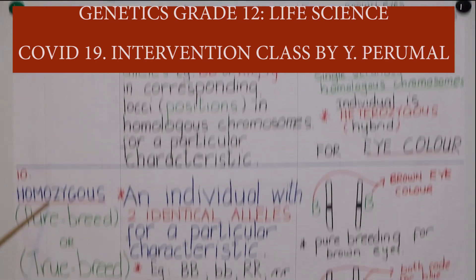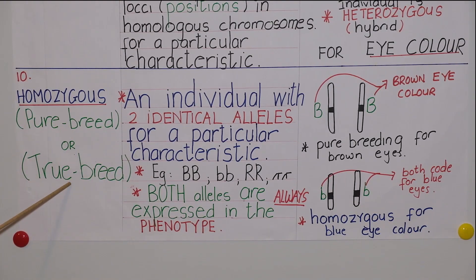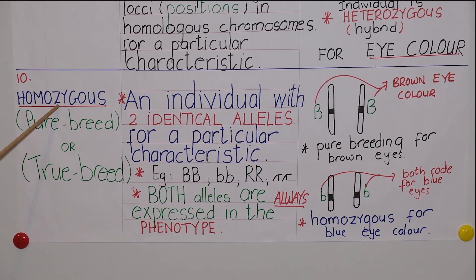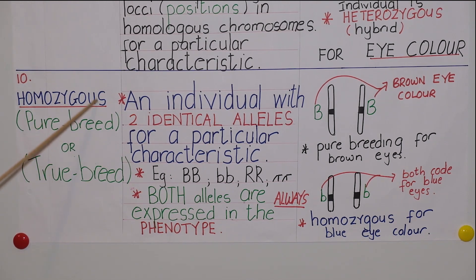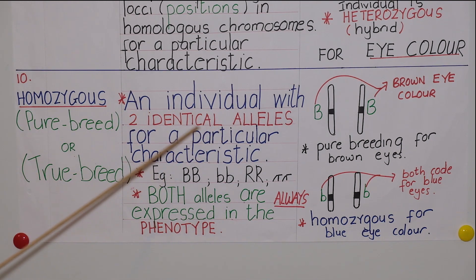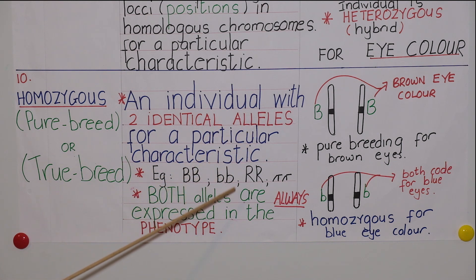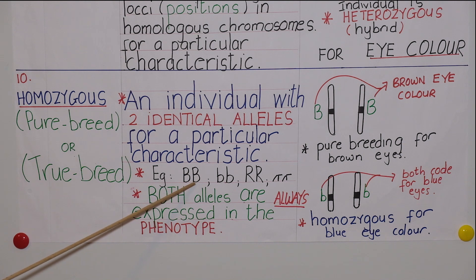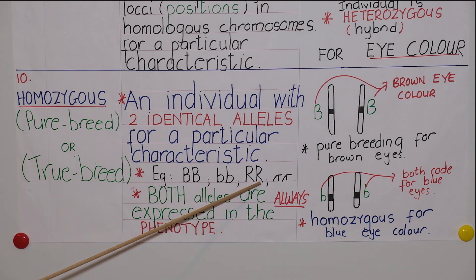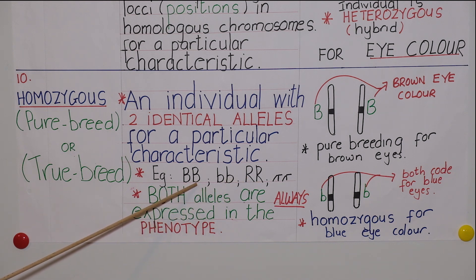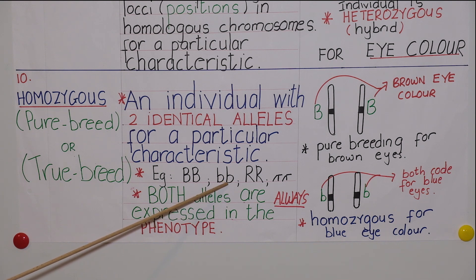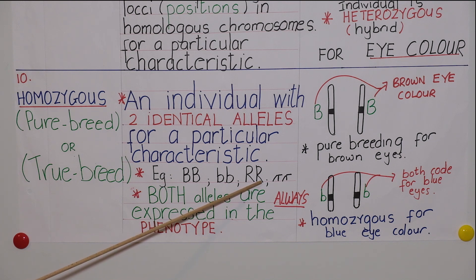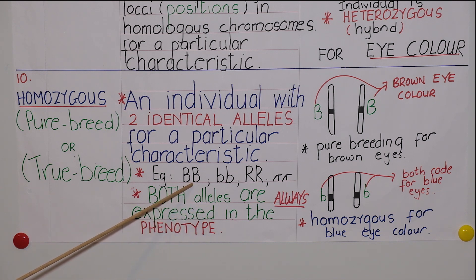The next concept is homozygous, or pure breed, or true breed. Homozygous is opposite to heterozygous. It refers to an individual with two identical alleles. The genotype would be two same letters: capital letter B coding for brown eye colour, two small letter b's coding for blue eye colour, or two capital letter R's coding for red flowers in plants.